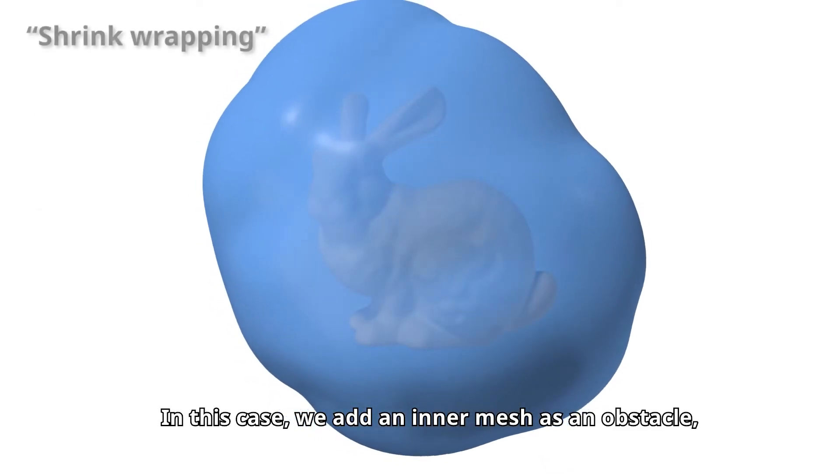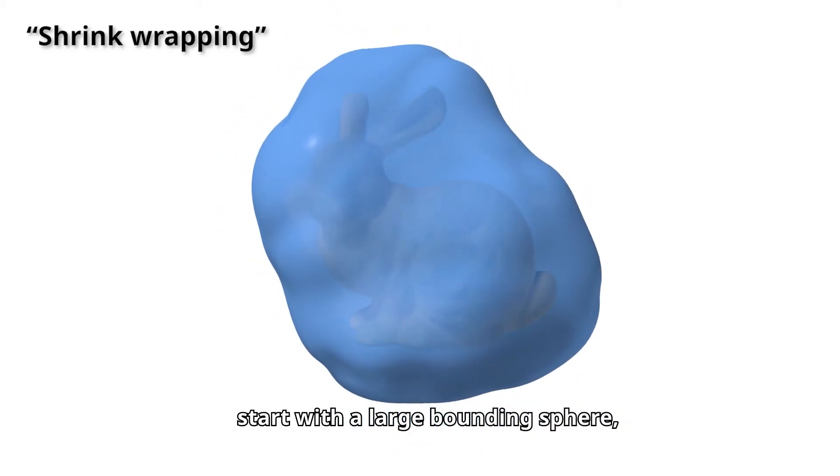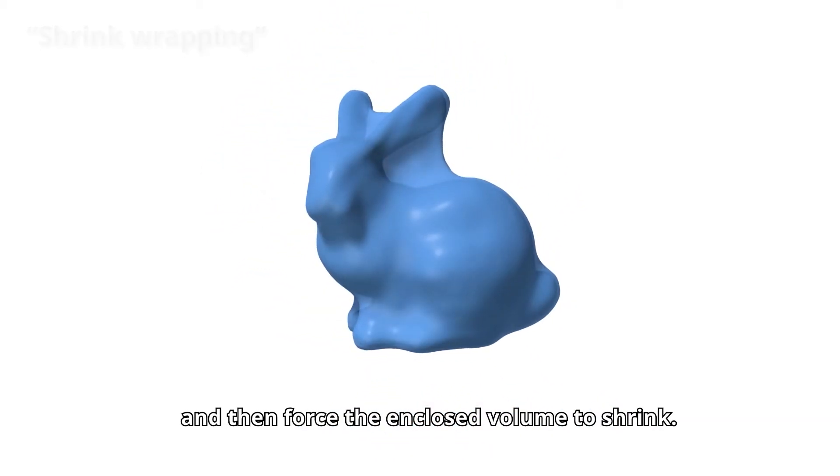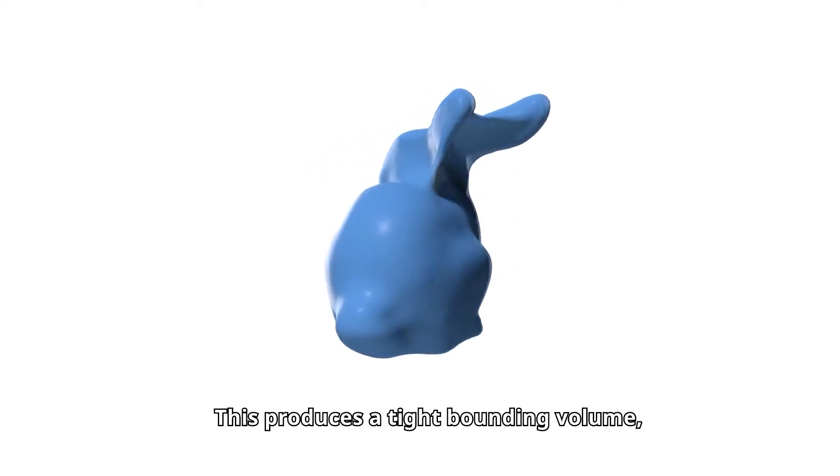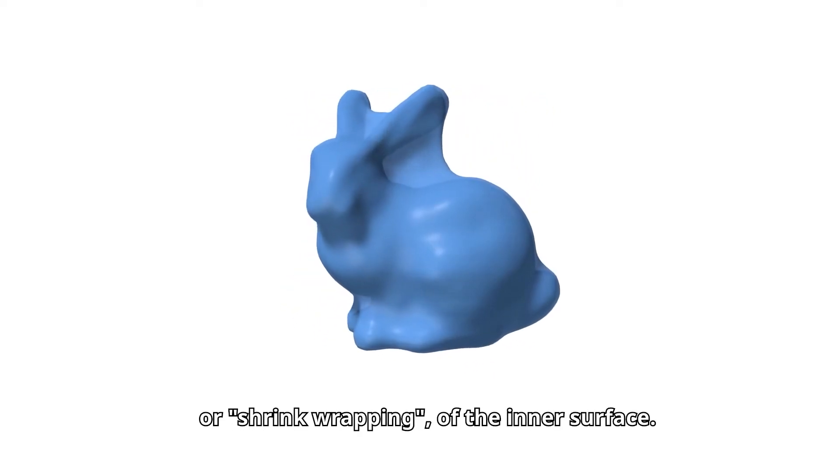In this case, we add an inner mesh as an obstacle, start with a large bounding sphere, and then force the enclosed volume to shrink. This produces a tight bounding volume, or shrink wrapping, of the inner surface.